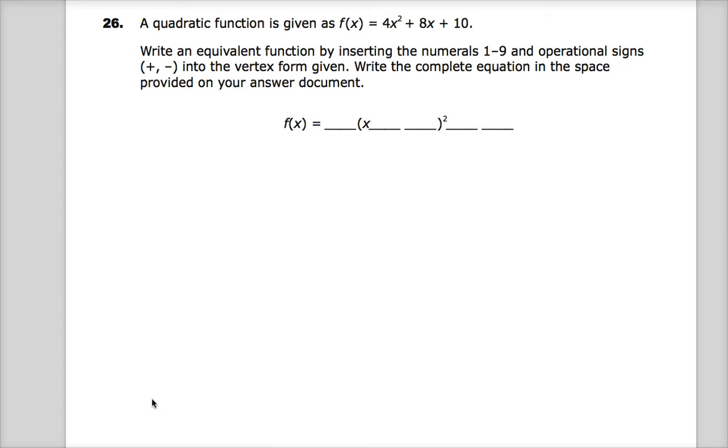A quadratic function is given as 4x squared plus 8x plus 10. That's in standard form. You'll notice that all the exponents are in descending order. This would be x to the first, x to the zero.